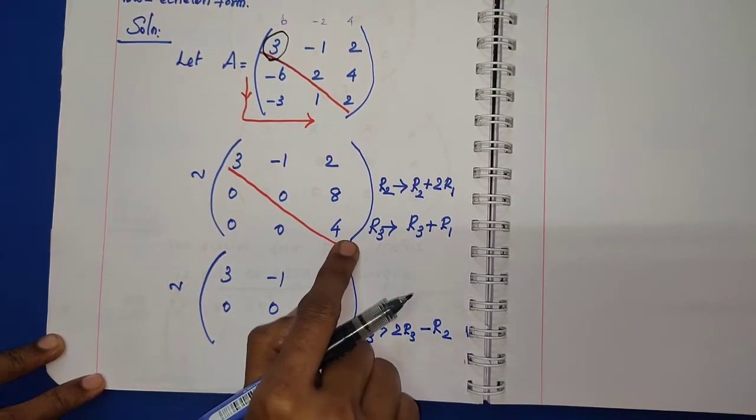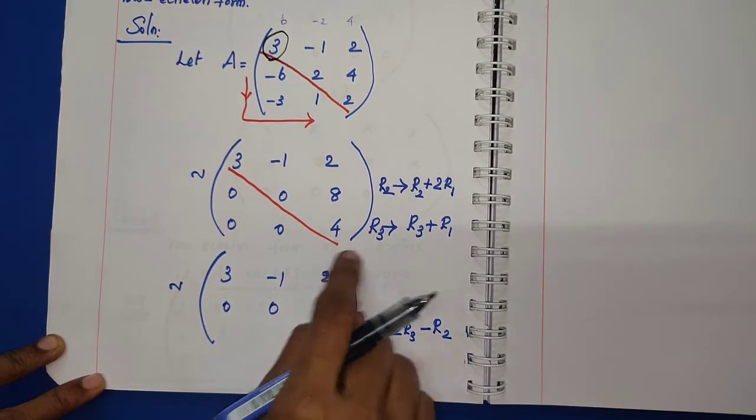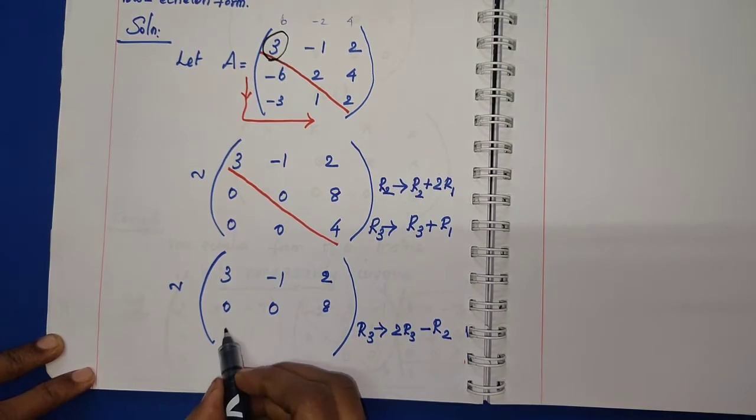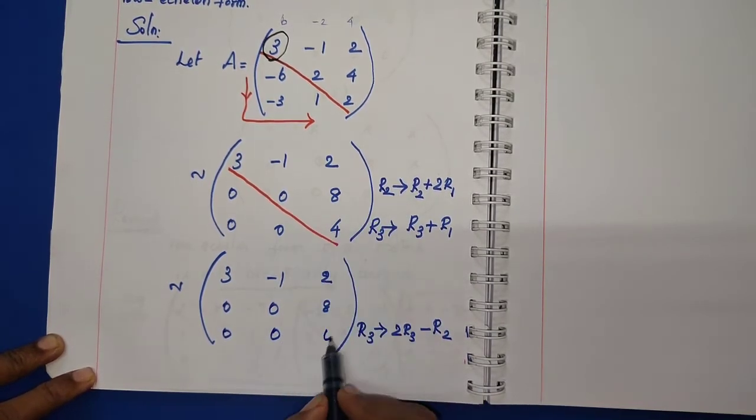See, the value 2 multiplied by 4 becomes 8. 8 minus 8 is 0. This term: 0, 0, 8 minus 8 is 0.